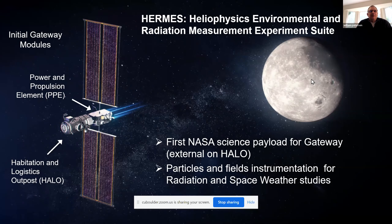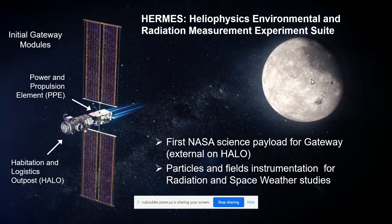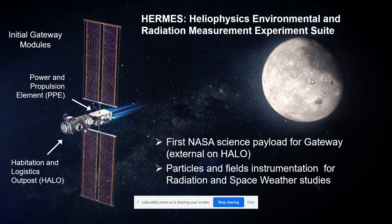Hermes is a Heliophysics Environmental and Radiation Measurement Experiment suite — a fairly clever acronym I did not devise. Gateway is a human exploration endeavor, but they're quite serious about having science on board from the very start. This was an opportunity for a mission that Heliophysics jumped on. It's very abnormal in terms of NASA projects — it had to come together very quickly, which meant flying instrumentation that had really flown before, and we developed a lot of our science objectives after the mission was determined to go on board.